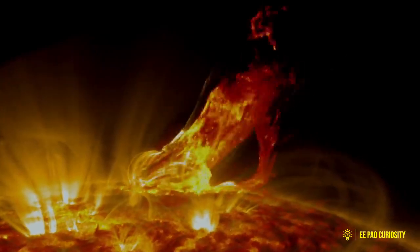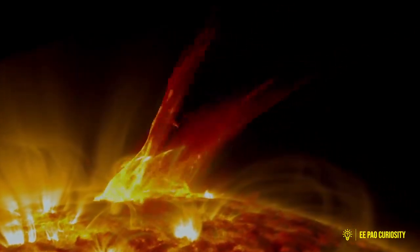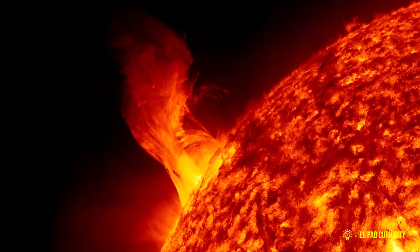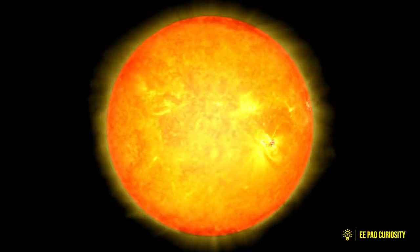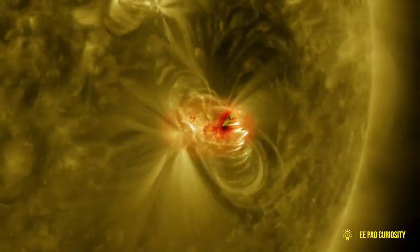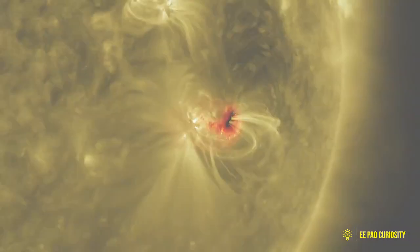Sometimes, like the volcanic eruption here on Earth, the Sun spits out large bursts of charged particles plasma, which is known as the coronal mass ejections or the solar storm.